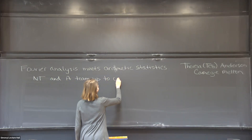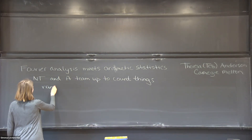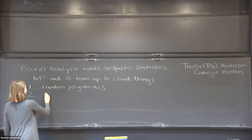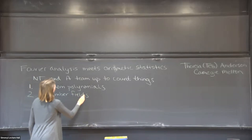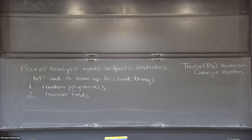Today we'll count two particular types of objects. First, we'll look at random polynomials, and second, we'll look at counting number fields. A common theme is that besides the fact that analysis and number theory both play a role in counting these objects, the statements are fairly simple yet notoriously difficult to prove, and they relate to a lot of recent work in the very active area of arithmetic statistics.